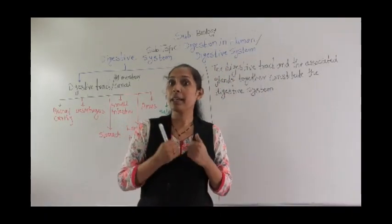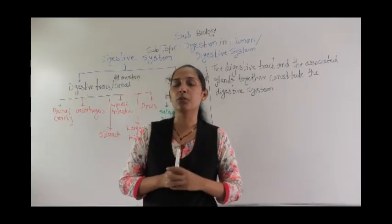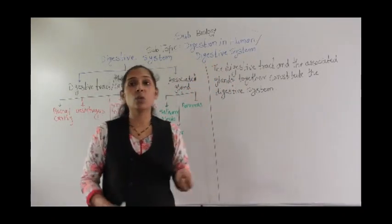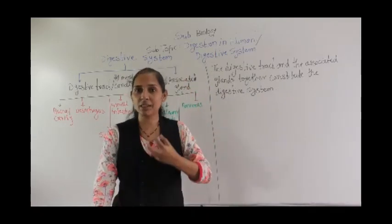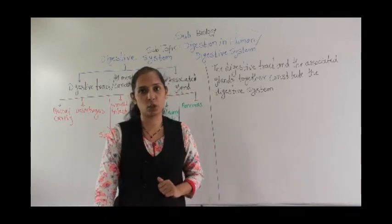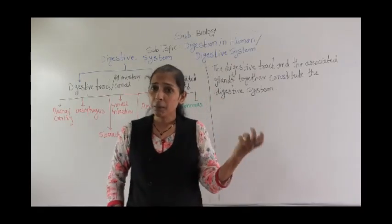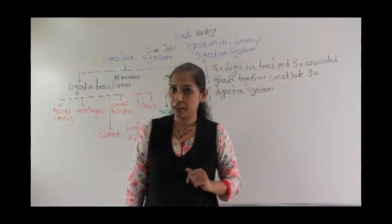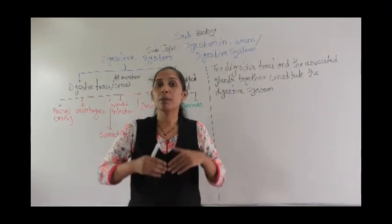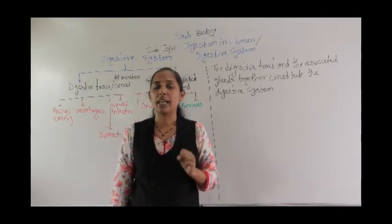Think about it — when we are having food, what exactly happens to that food? We put food into our mouth and throw out the undigested food with the help of the anus. But those are not the only two processes. Once the food enters our mouth, so many processes are going on. The beginning of digestion happens in our mouth, also called the buccal cavity, and it ends at the anus. To perform all these digestion processes, so many organs come together.